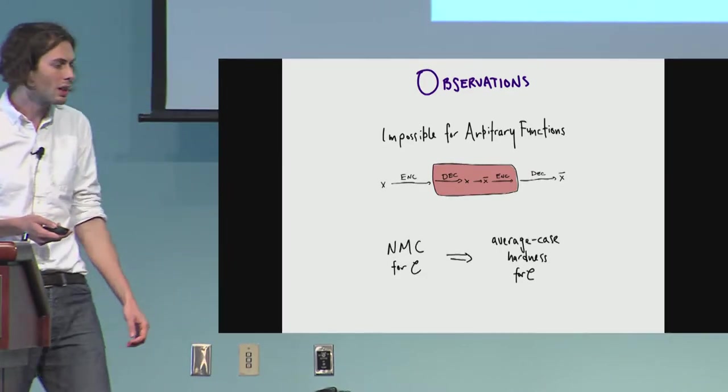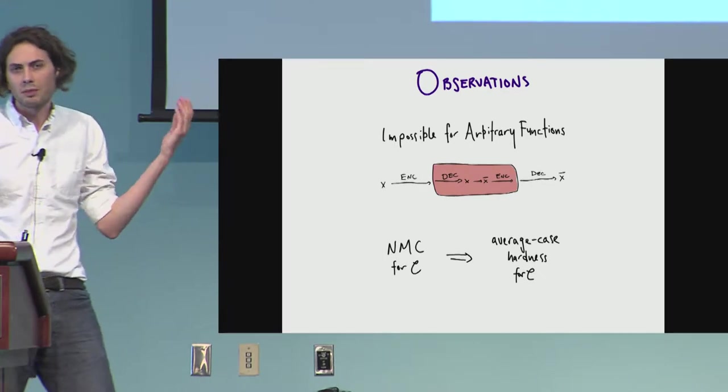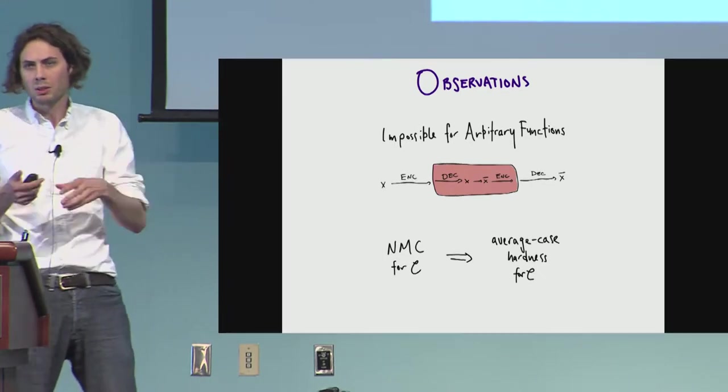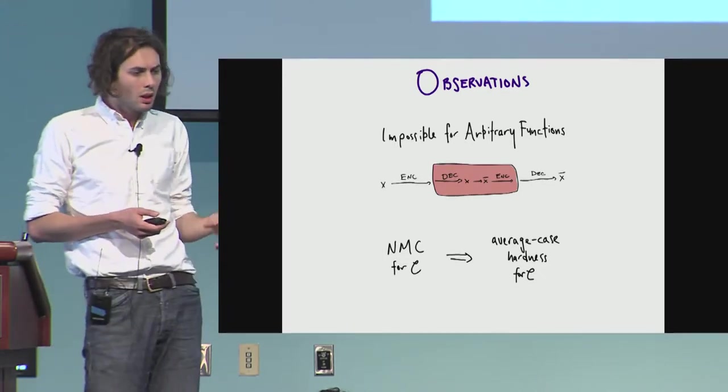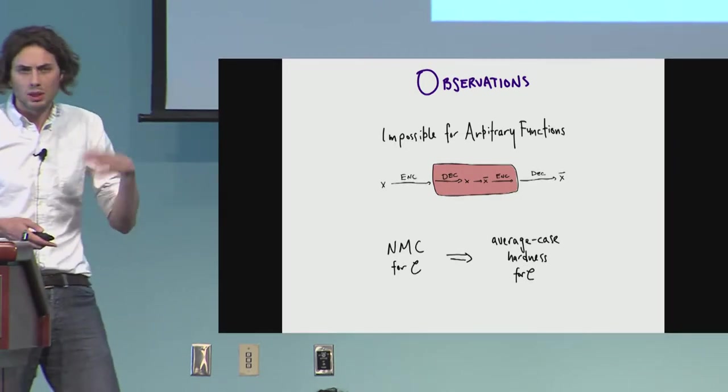You might consider, okay, let's consider a natural thing to consider is like fix some complexity class. Like in cryptography, we often have P adversaries. But if you think about it a little bit, you can think about it on your own.